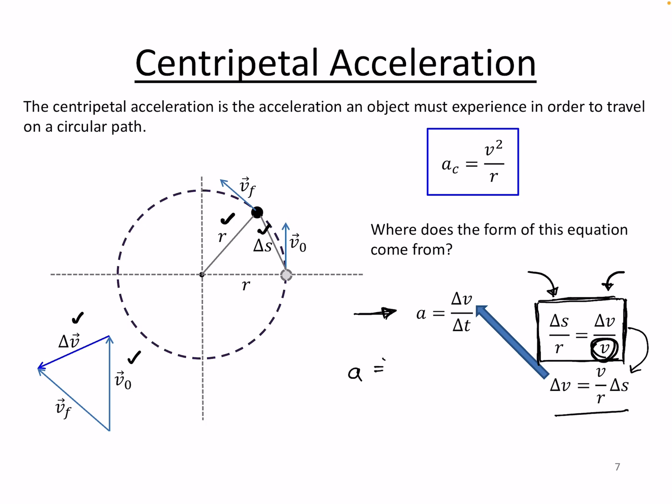So we substitute that in, we get, let's do it this way. So we have 1 over delta T, and then in the numerator, so multiplying that whole thing, is that V over R times delta S. And if we just group this a little bit creatively, so we leave V over R, and we put delta S over delta T.